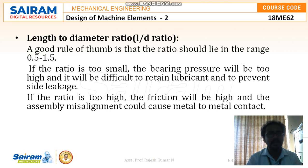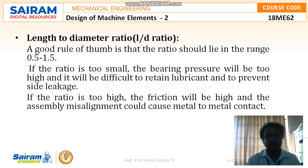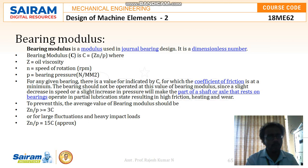Moving to the length-to-diameter ratio, the l/d ratio: a good rule of thumb is that the ratio should lie in the range of 0.5 to 1.5. If the ratio is too small, the bearing pressure will be too high and it will be difficult to retain lubricant and prevent side leakage. If the ratio is too high, friction will be high and assembly misalignment could also cause metal-to-metal contact.